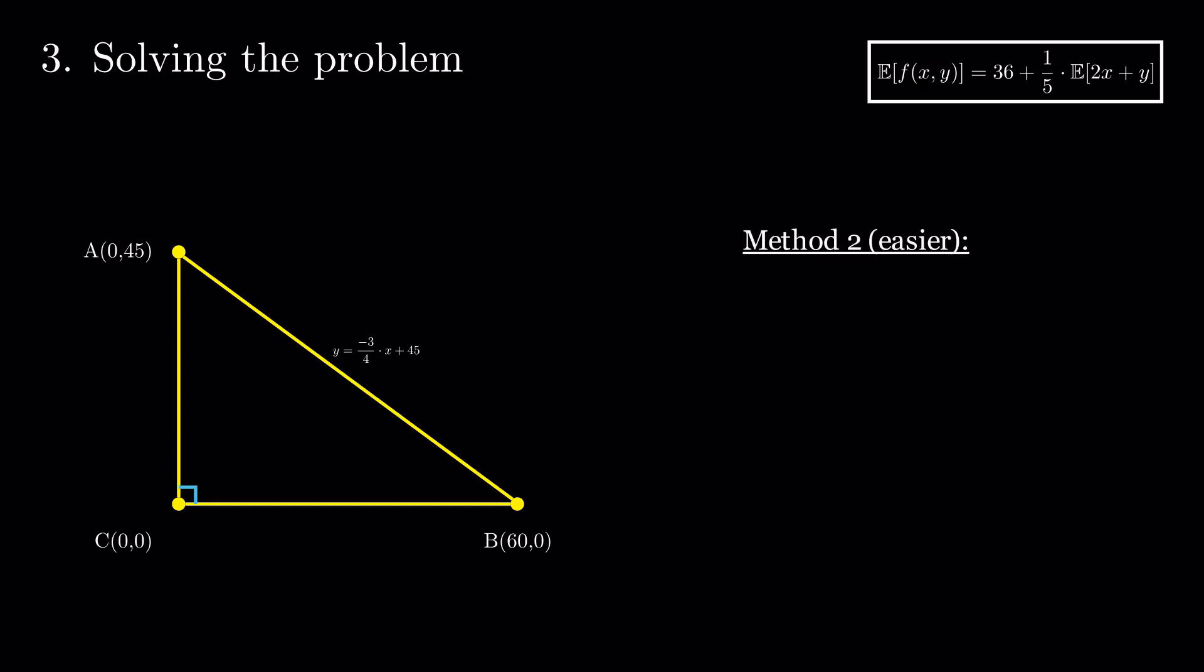We do have an easier option, though. We can compute expectation of x and expectation of y separately. For expectation of x, we integrate between 0 and 60 the function x times density of x. We do the same for y, changing the interval and the density function. Again, using linearity, we get the same result, 47.